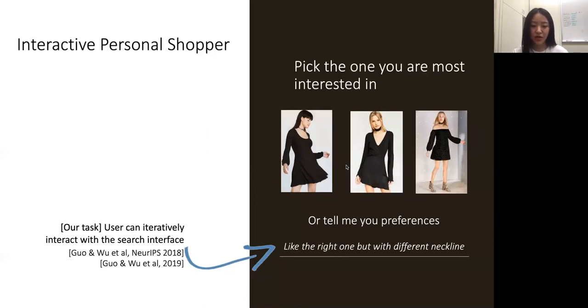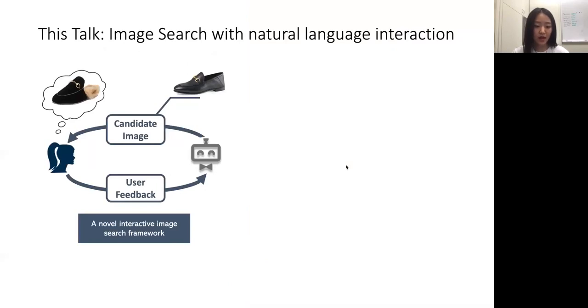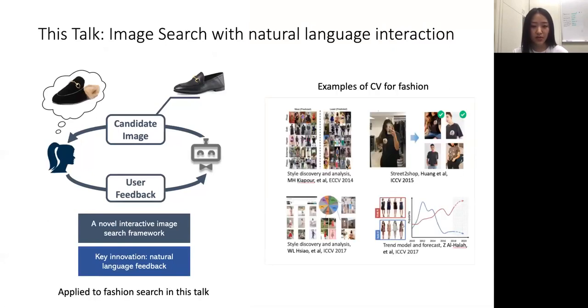This is our task. We would like to design a novel interactive image search framework that allows the user to provide natural and flexible natural language feedback. This is a very challenging problem, so we choose a specific domain to test this idea. We choose fashion search in this talk. We choose this domain because fashion is a very large business and it actually inspired a lot of interesting work in computer vision. But the framework we propose in this talk can be generic and apply to other image domains.